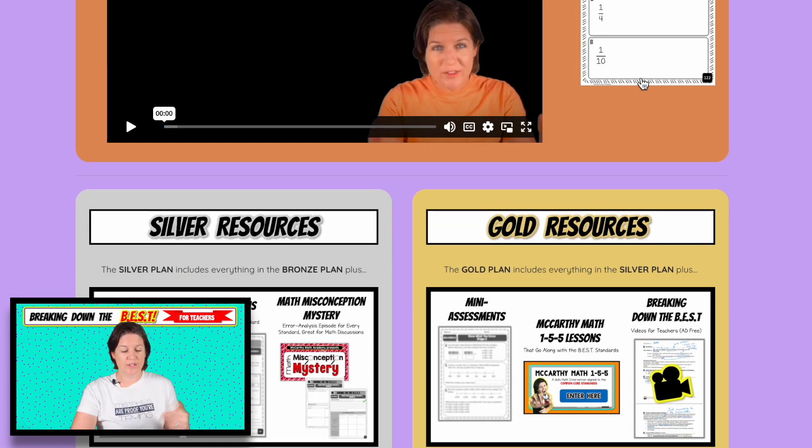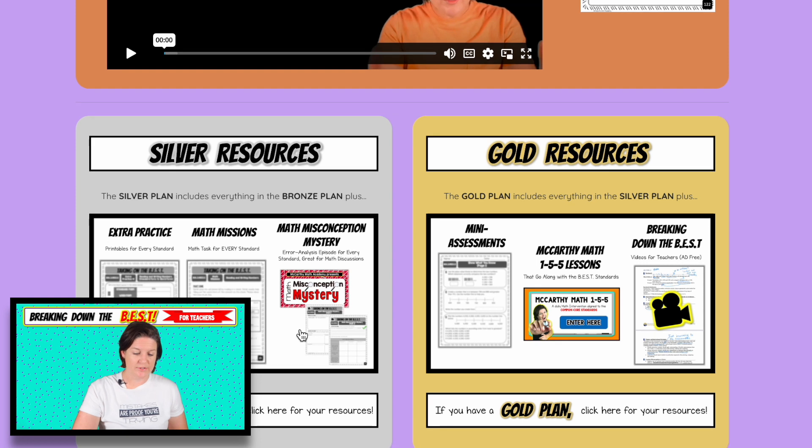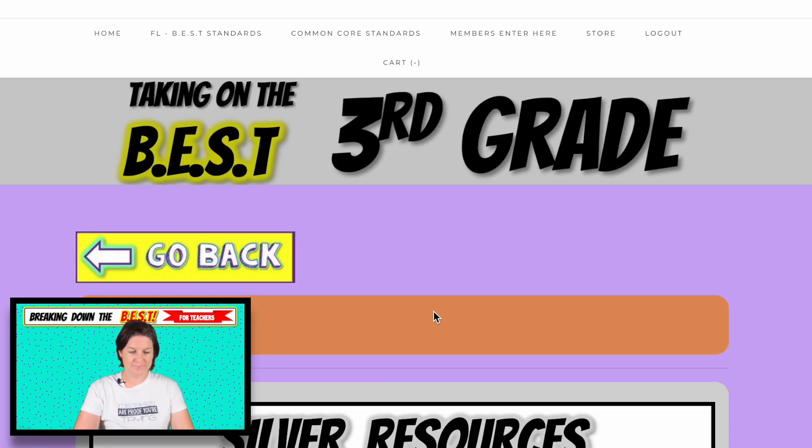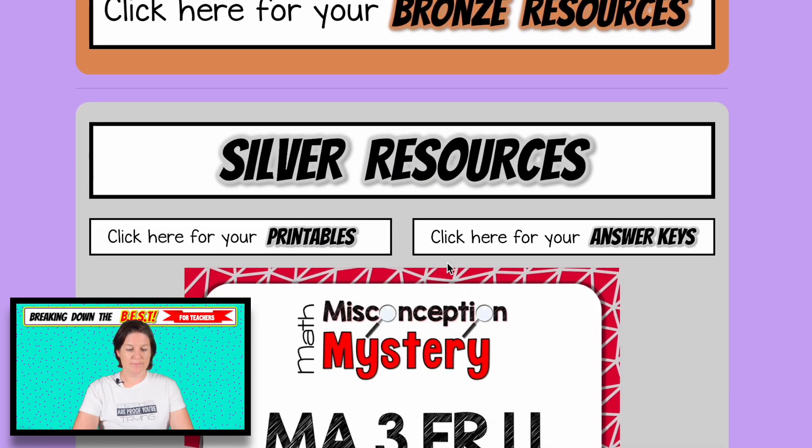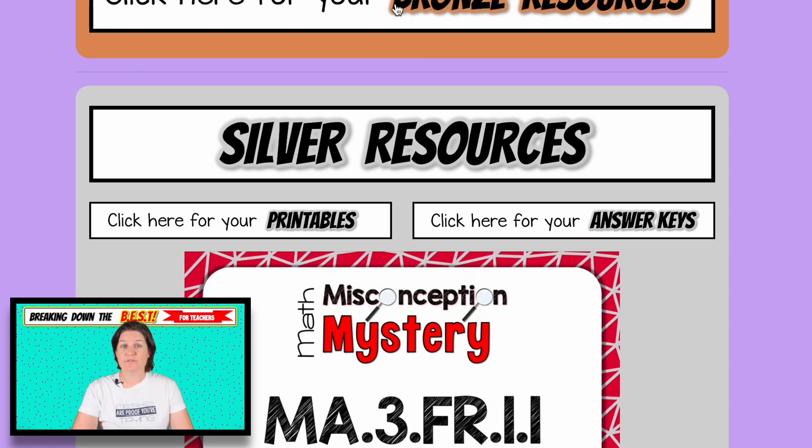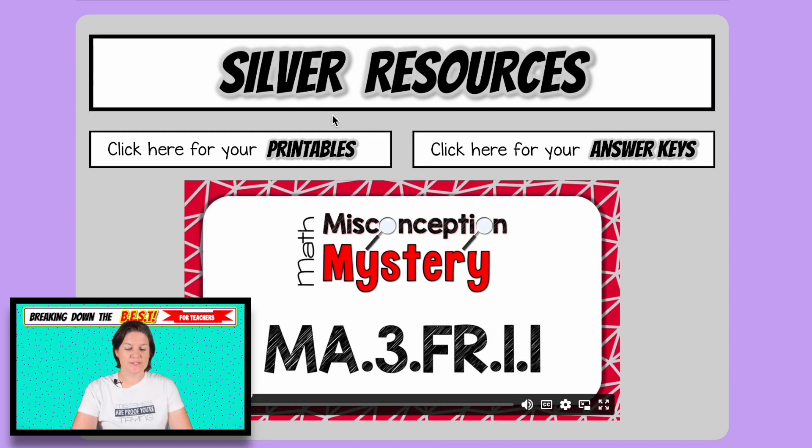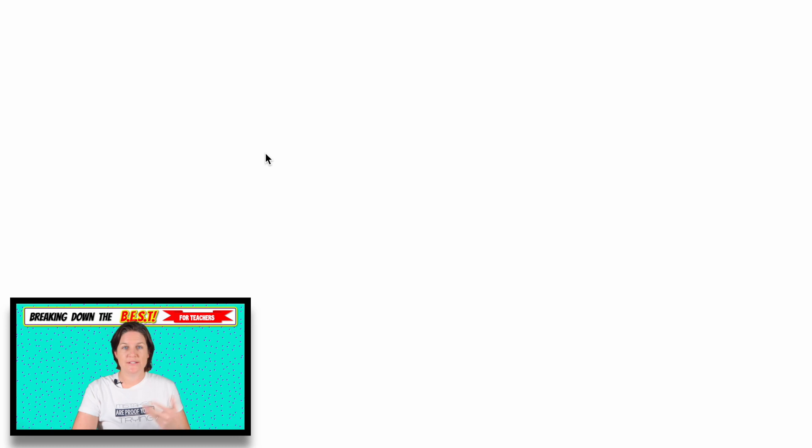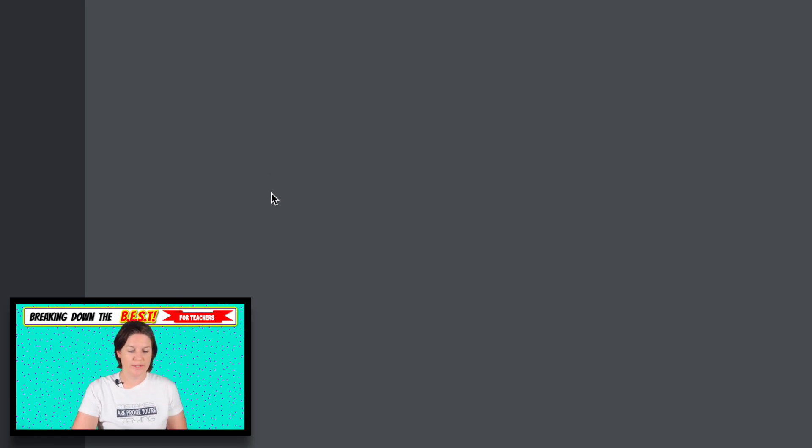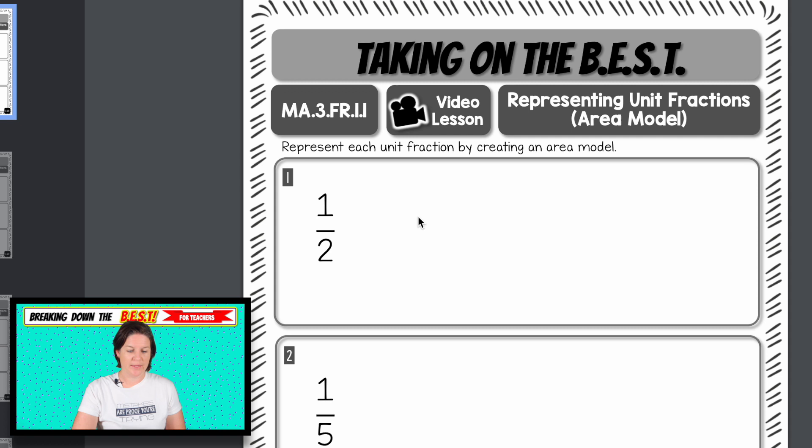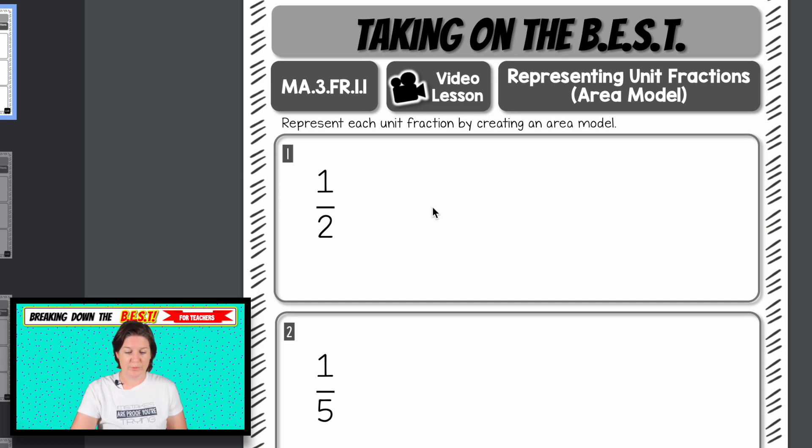Let's go to the silver plan. You can go back to those bronze video lessons at any time, but the silver plan has extra practice, extra printables involved. Let's open this up to see what it says. And you can see the very first page that comes is the bronze video lesson. It's everything kind of together. It makes it easier for you to download and print.